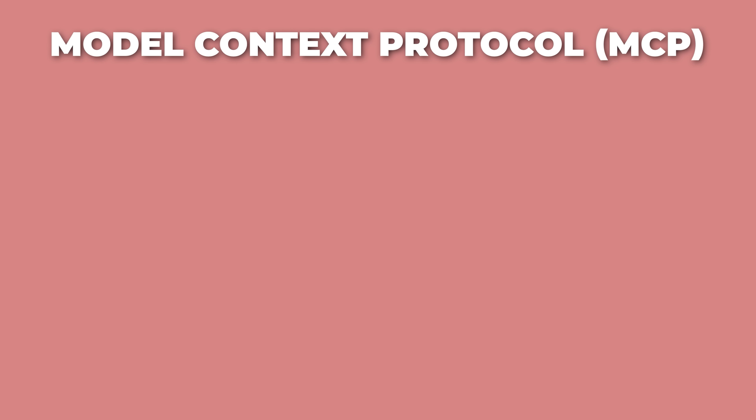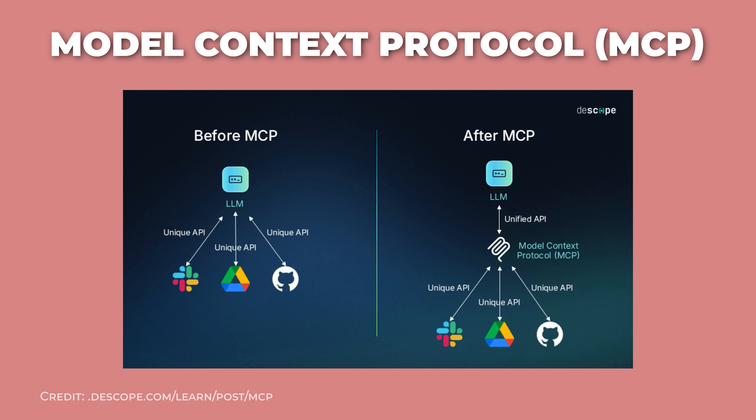Finally, as AI systems get more complex, we need better ways for different parts to work together. MCP, or Model Context Protocol, is like a universal adapter that lets models, apps, and tools connect through the same interface. Instead of building custom integrations for everything, you just plug into the standard. It's about making AI systems that actually work together instead of being isolated little islands.